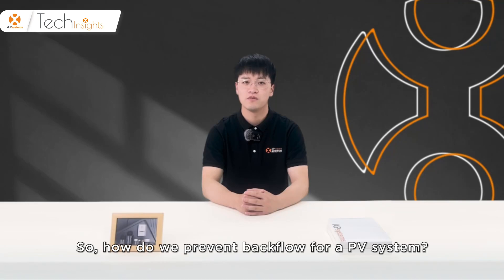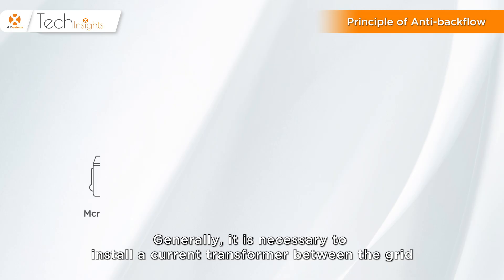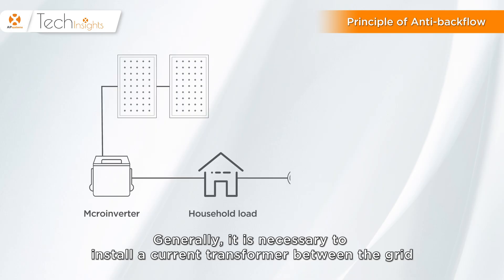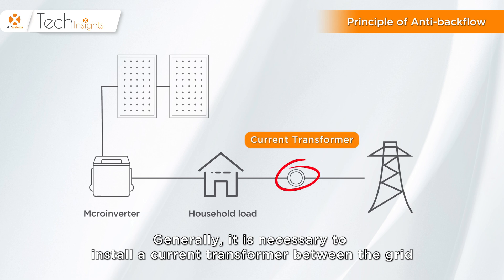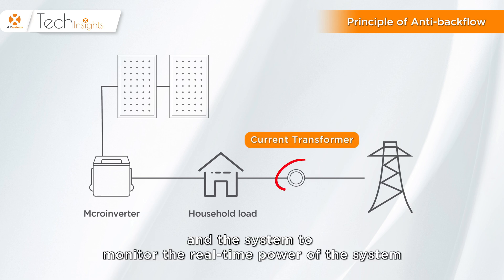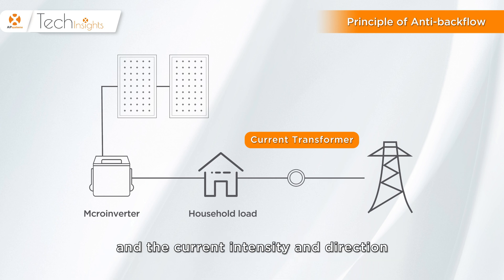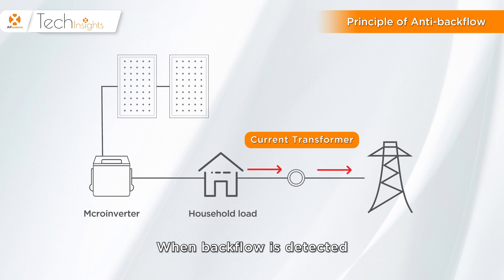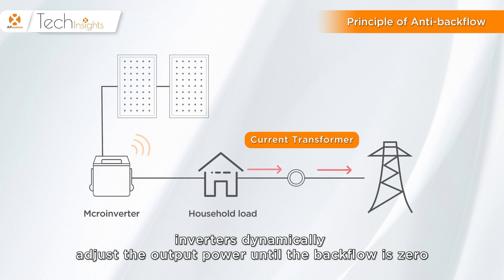Generally, it is necessary to install a current transformer between the grid and the system to monitor the real-time power of the system and the current intensity and direction. When backflow is detected, inverters dynamically adjust the output power until the backflow is zero.